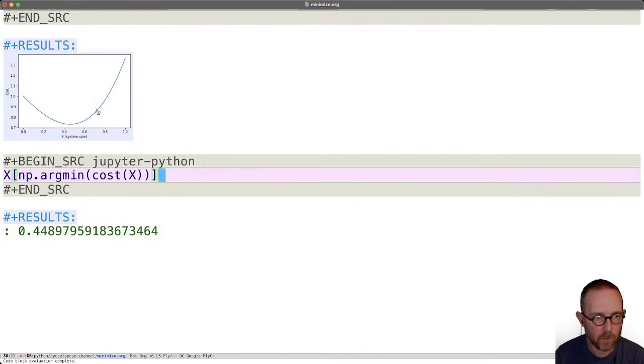This is just an estimate because remember these are discrete points and it's kind of flat down here. This is not the analytical minimum that you might find if you say took the derivative of this curve and used fsolve to get the zero point or if you did solve_ivp with an event to find the minimum here.